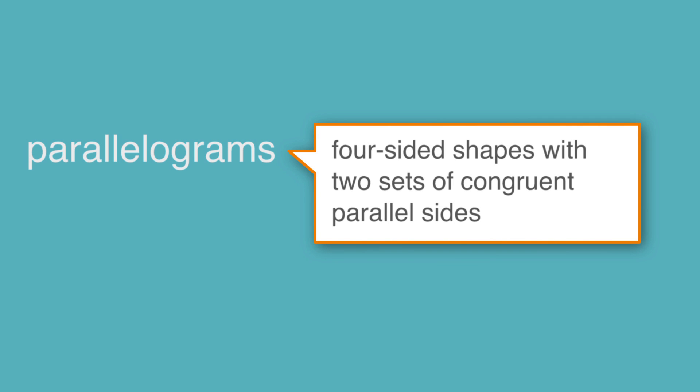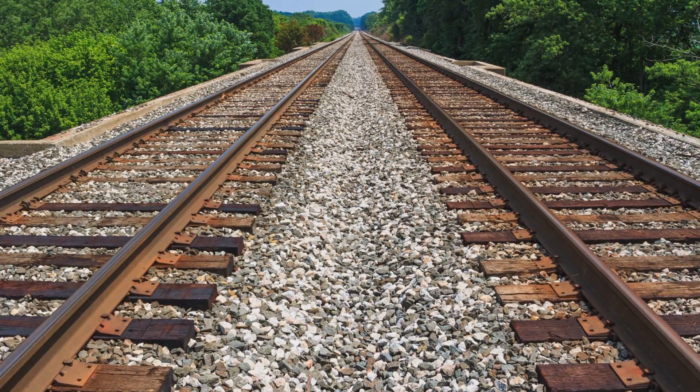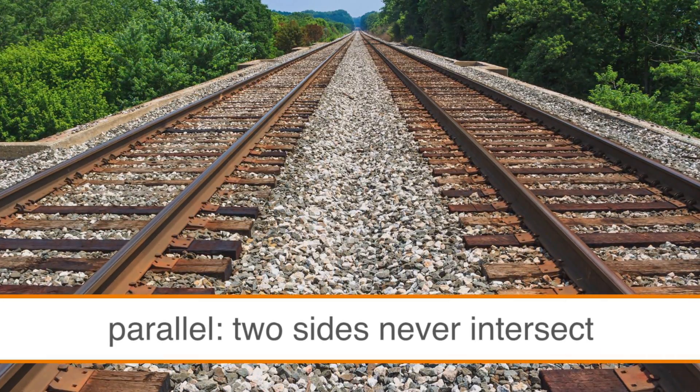Parallelograms are four-sided shapes with two sets of congruent parallel sides. Remember that parallel just means that the two sides will never intersect, no matter how long they are. Parallelograms can be slanted, or they can be rectangles or squares.